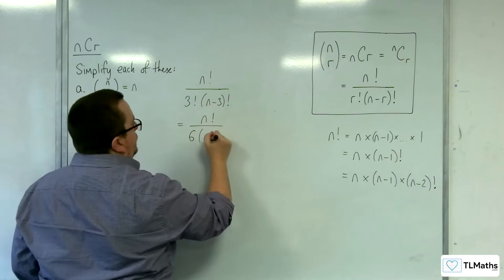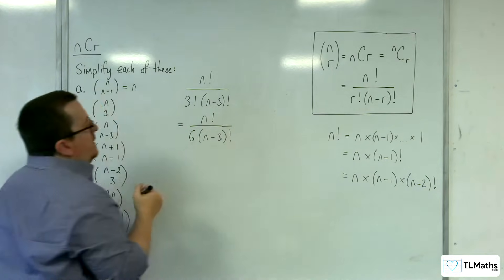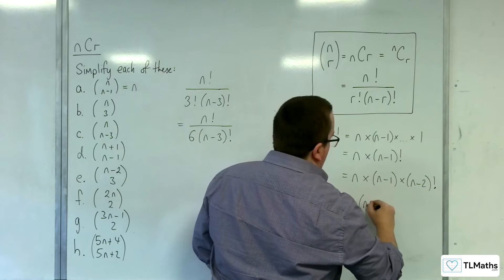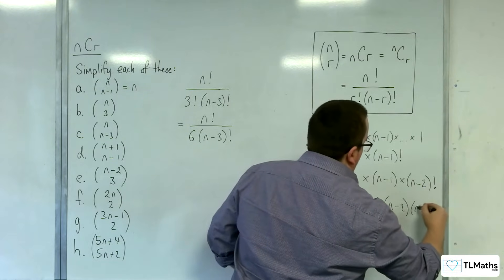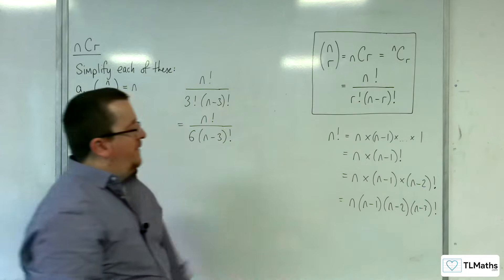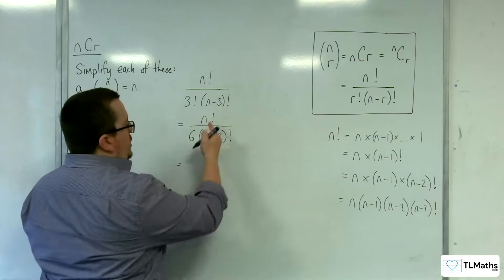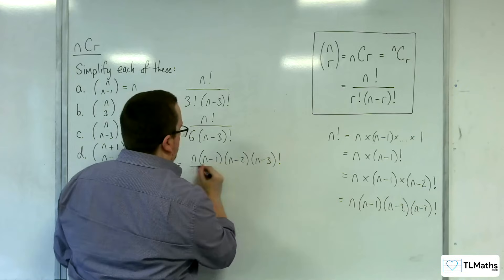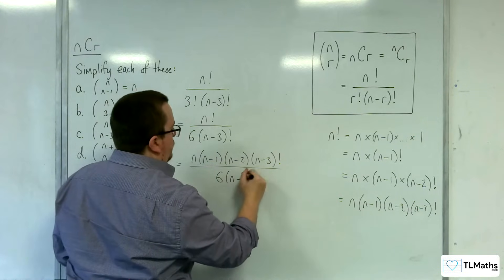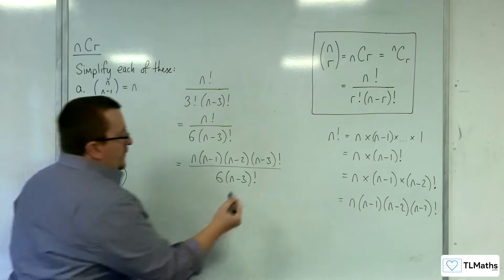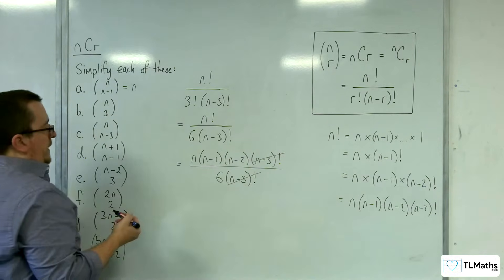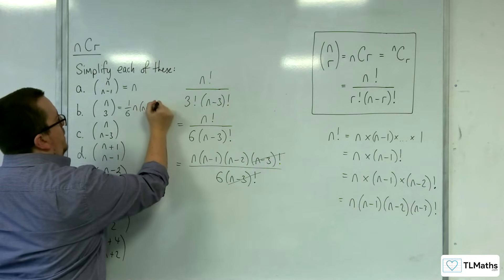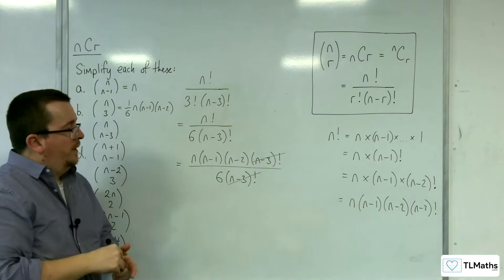In much the same way, extending this, we can see that N times N-1 times N-2 times N-3 factorial is the same as N factorial. So we can write the numerator as N times N-1 times N-2 times N-3 factorial, and in the denominator we have 6 lots of N-3 factorial. The N-3 factorials cancel, leaving us with one sixth of N times N-1 times N-2. And that is simplified.